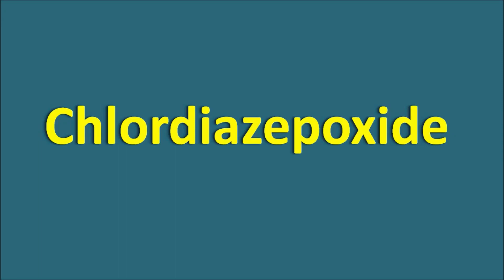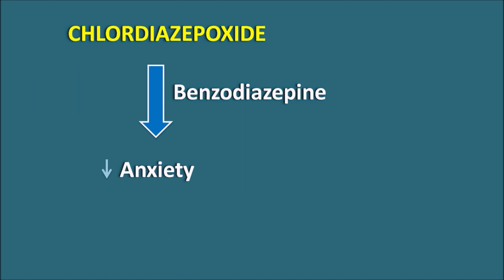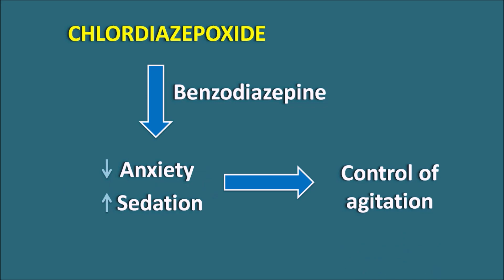In this video, let us discuss about Chlordiazepoxide. This drug is a benzodiazepine which is used to decrease anxiety as well as increase sedation. It can control agitation in patients, which is why it is also called a Minor Tranquilizer. This is the first drug in the benzodiazepines having a small structural difference compared with the other benzodiazepines. We will see the structure, mechanism of action, side effects, drug interactions, and contraindications.